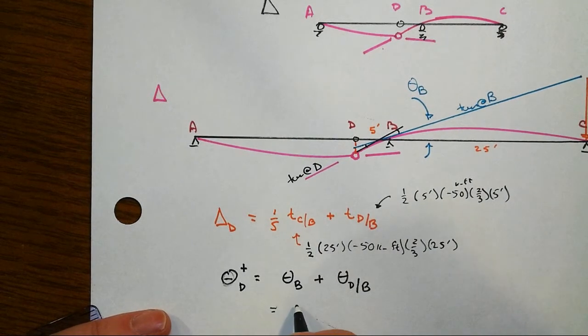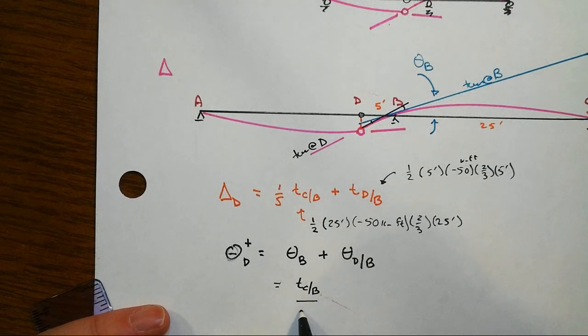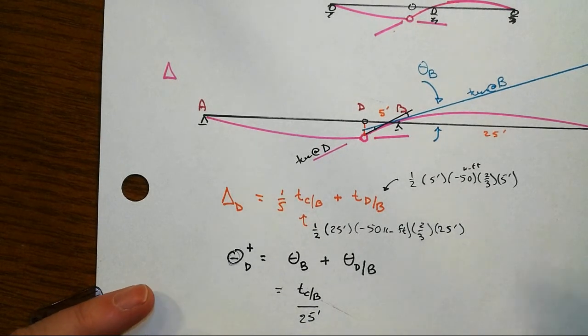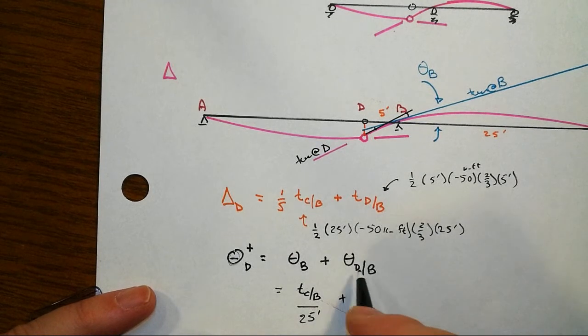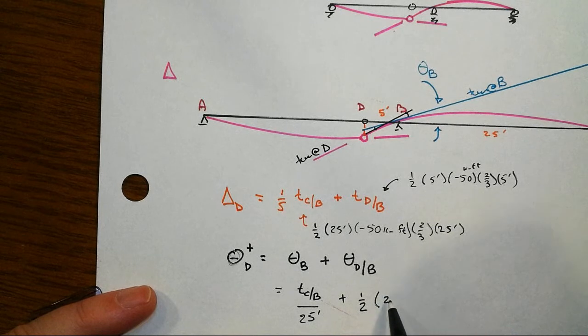It's really tangent, right, but because that will work out in terms of radians to be so small, we don't really have to be that focused on taking the tangent. Plus then the theta DB, now that's a relative angle change, angular deviation. That's just the area under the M over EI diagram between those two points, so that's one-half of the 25 feet times the 50 kip foot.